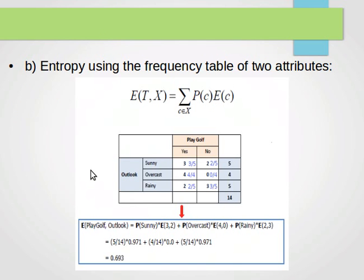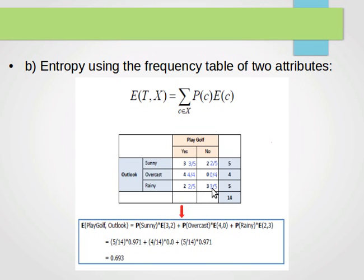The other type of entropy we need to compute is entropy after splitting. If we split using Outlook, we compute the entropy as the probability of each value of Outlook times the entropy of the class values for that Outlook. We use the probabilities for the rows, not the columns — unlike in Naive Bayes — because we want to split according to the values of these categories. For sunny we have 3 yeses and 2 noes, so probabilities are 3 over 5 and 2 over 5.